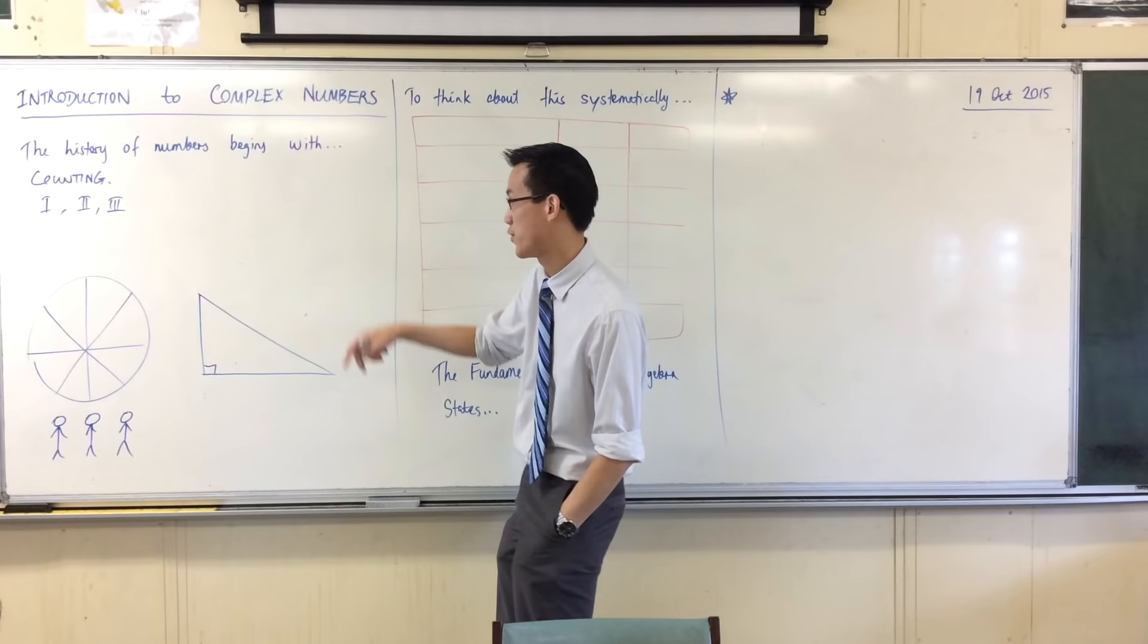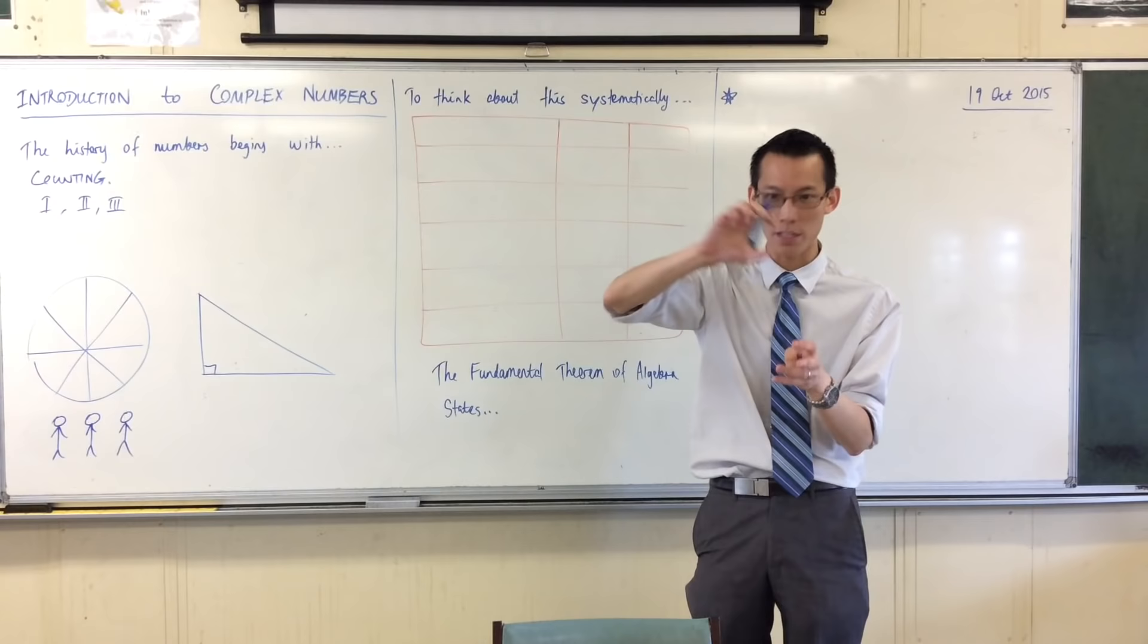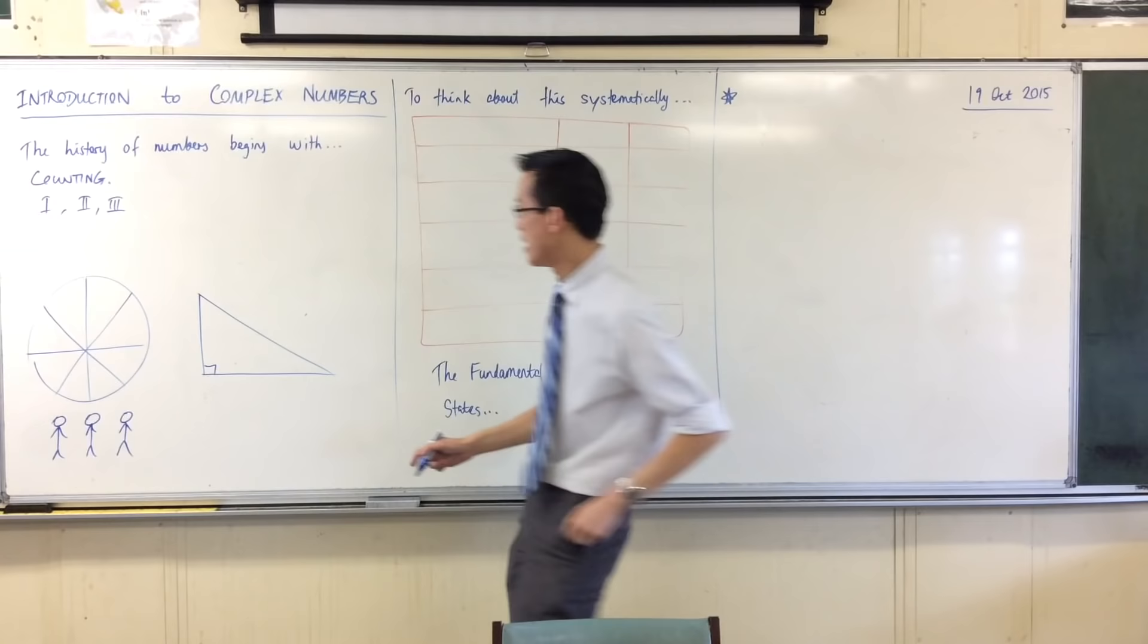And it's not just the Romans. In fact, more or less every counting system and all the symbols that we use, for example the Chinese script and the Japanese script, it looks like this: one, two, three. It's got the same pattern of counting built into it.